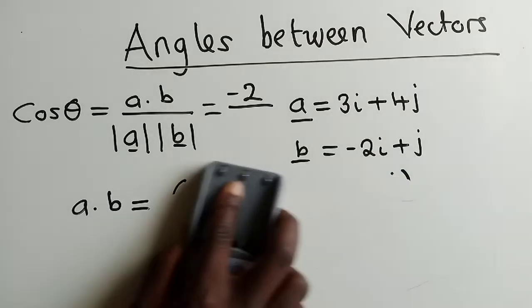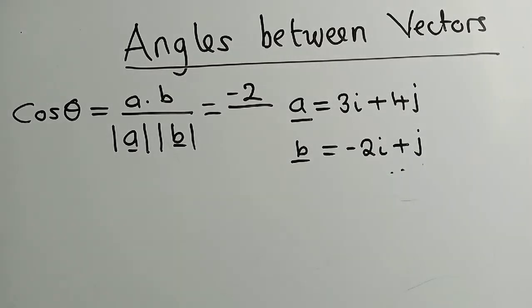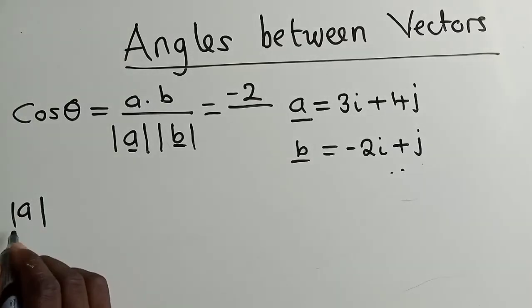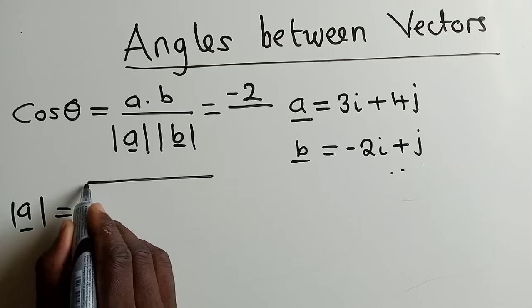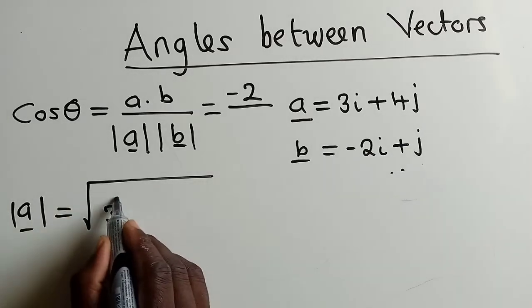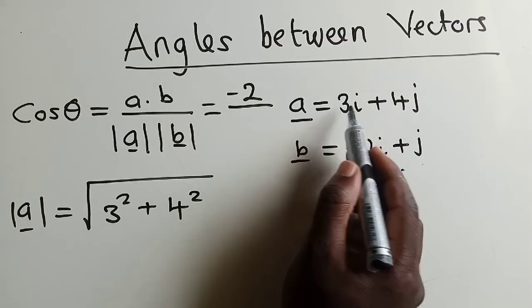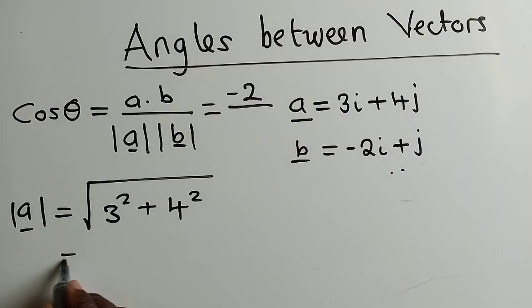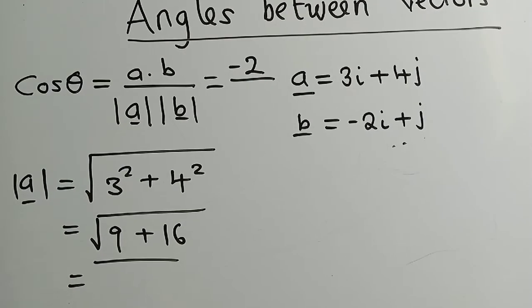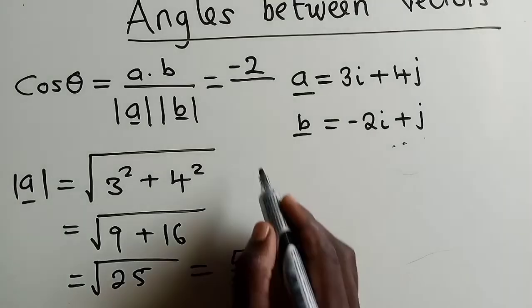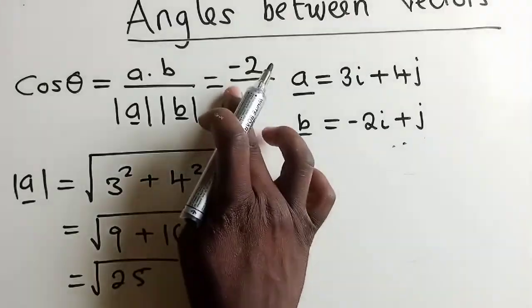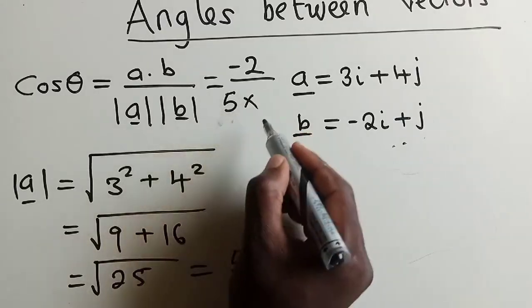We now find the magnitude of A. The magnitude of vector A right here will be equal to 3 squared plus 4 squared. We have 9 plus 16 here. We work out things, we find that we have 25 inside. Square root of 25 is just 5. So we can write 5, 5 right here, times...